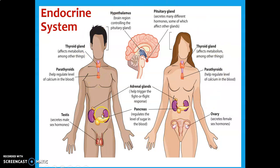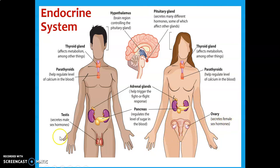As you can see, there's a whole bunch of them — probably a lot you may have heard of but aren't quite sure what they do. For the reproductive system, we're going to focus on the testes and the ovaries, because they're what secrete the sex hormones: testosterone and estrogen.